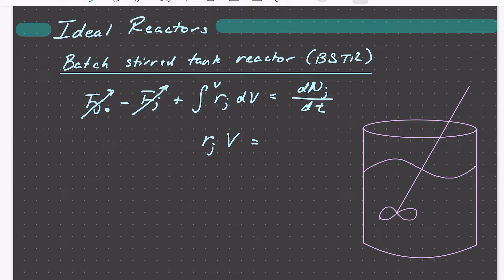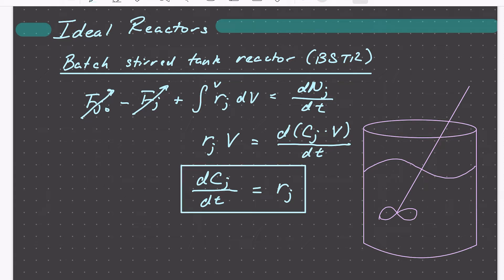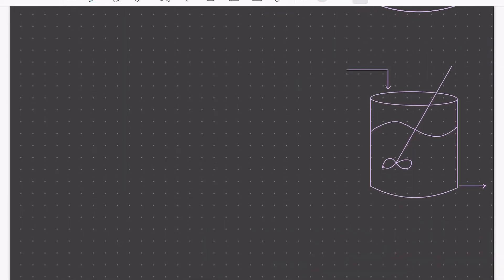If we take the volume of the reactor to be constant with time, we can represent the change in number of moles with time in a more convenient way. We can write the number of moles of J as the concentration of J times the reactor volume. Assuming volume doesn't change with time, we can take the volume out of the time derivative and cancel it, giving us a simple mole balance: the change in concentration with time of J is equal to the rate of formation of J. This holds for our constant volume, well-mixed batch stirred tank reactor.